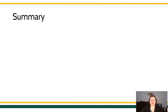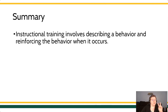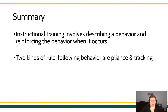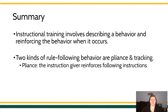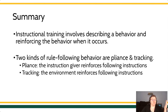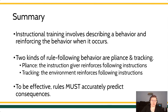In summary, instructional training involves describing a behavior and then reinforcing it when it occurs. There are two kinds of rule-governed behavior: pliance and tracking. Pliance is when the instruction giver is also the person who reinforces instruction following. Tracking is where the natural environment reinforces following good advice. But the most important takeaway is that your rules must accurately predict the consequences — if there's not perfect correspondence between the antecedent and the consequence, the verbal rule means nothing and your instructions lose their value and power.